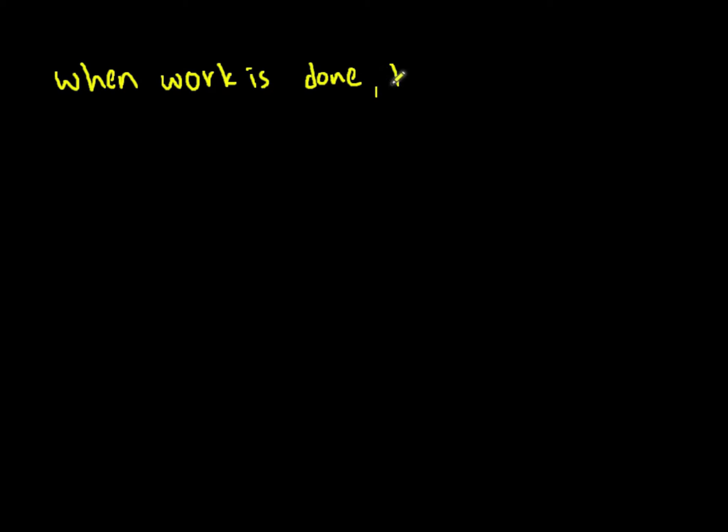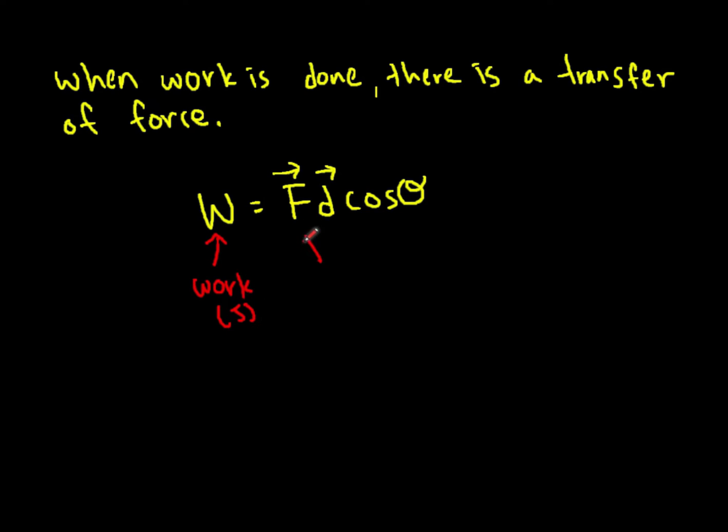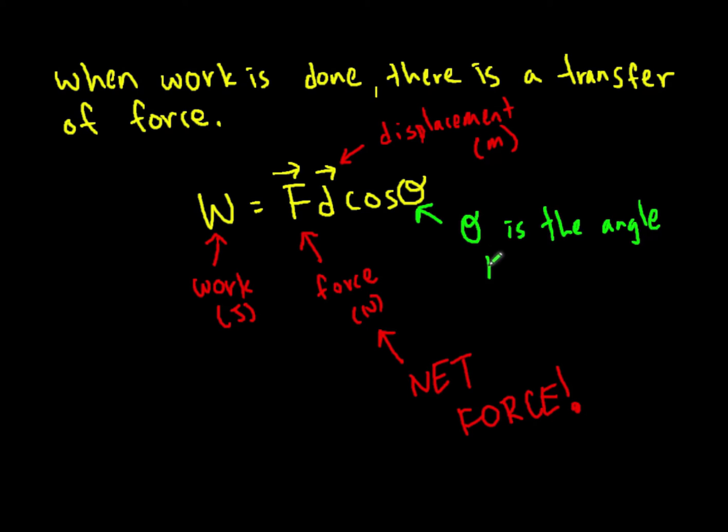When work is done, there is always a transfer of force. Energy might be added to the system as force is exerted on the system, or energy might leave the system as the system exerts force on another object. We have a second formula for work, which is work equals Fd cos theta. In this formula, W stands for work, which is measured in joules. F is force, which is measured in newtons, and D is displacement, which is measured in meters. It's important to note that this force here is the net force on the object, the total of all the forces combined. Theta is the angle between the force and the displacement.